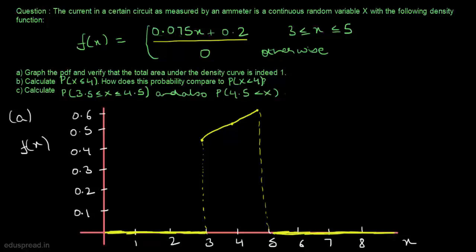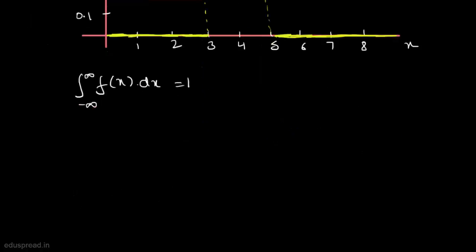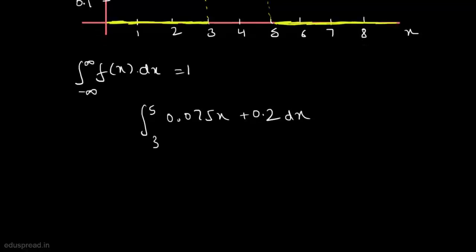Now let's verify that the total area under the density curve is indeed 1. To do that we have to show that the integral of f of x dx from minus infinity to infinity equals 1. Since f of x equals 0.075x plus 0.2 when x is between 3 and 5, we integrate 0.075x plus 0.2 from 3 to 5.